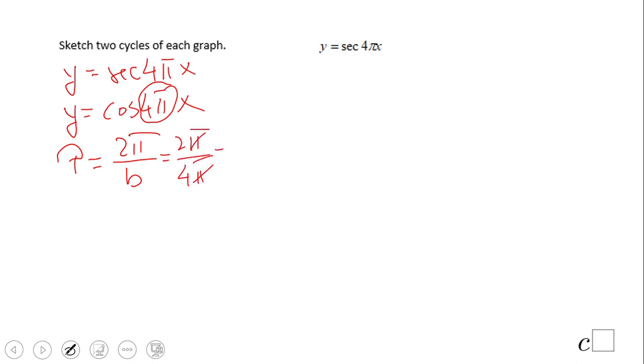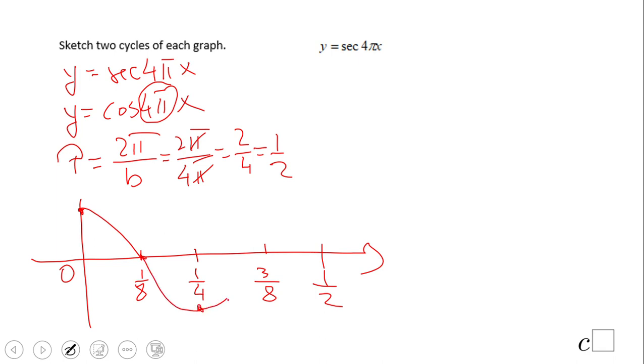The π cancels out so we have 2 over 4 which is 1 half. Basically now we can draw a graph: 0, 1 half is the period, 1 over 4 here, 1 over 8 and 3 over 8. These are the five important points of cosine of 4πx: max, zero, min, zero, max. I'm gonna keep doing a little bit more.